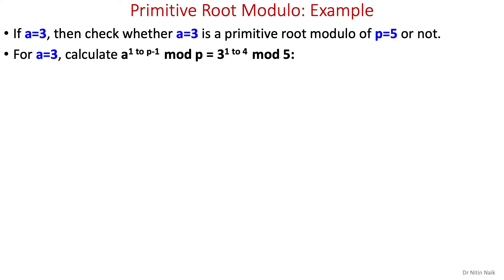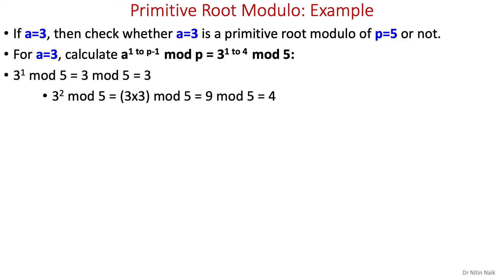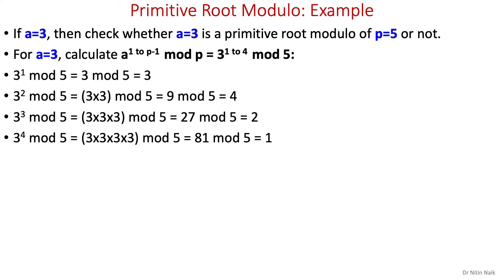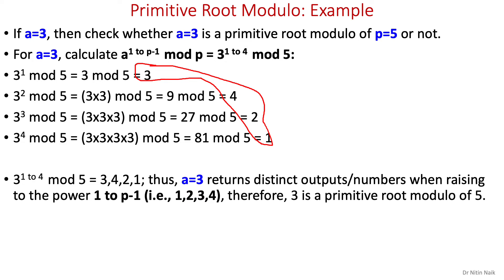Next, a equals 3. Calculate all powers 1 to p minus 1, that is 1 to 4: 3¹ mod 5 = 3, 3² mod 5 = 4, 3³ mod 5 = 2, 3⁴ mod 5 = 1. All outputs are different, therefore 3 is a primitive root modulo of 5.